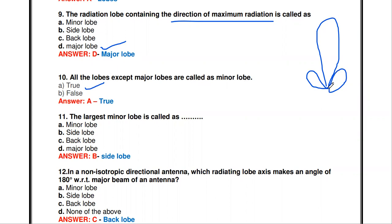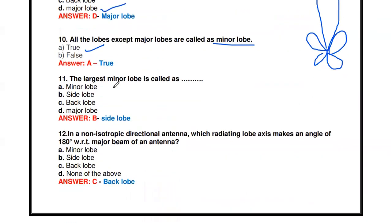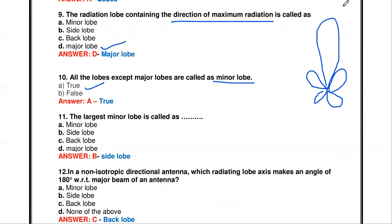Except for the major loop, all the remaining small loops — side loops and others — are called minor loops. The largest minor loop is called the side loop. Nearer to the major loop, there are two largest minor loops, and those are called side loops.